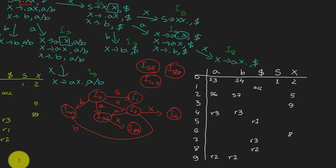The difference is in reduce moves. In SLR1 we use the follow sets, and for LR0 we just put the reduce moves under all the terminals. But in LALR1, the look-aheads come in handy, so we put the reduce moves only under the look-aheads.